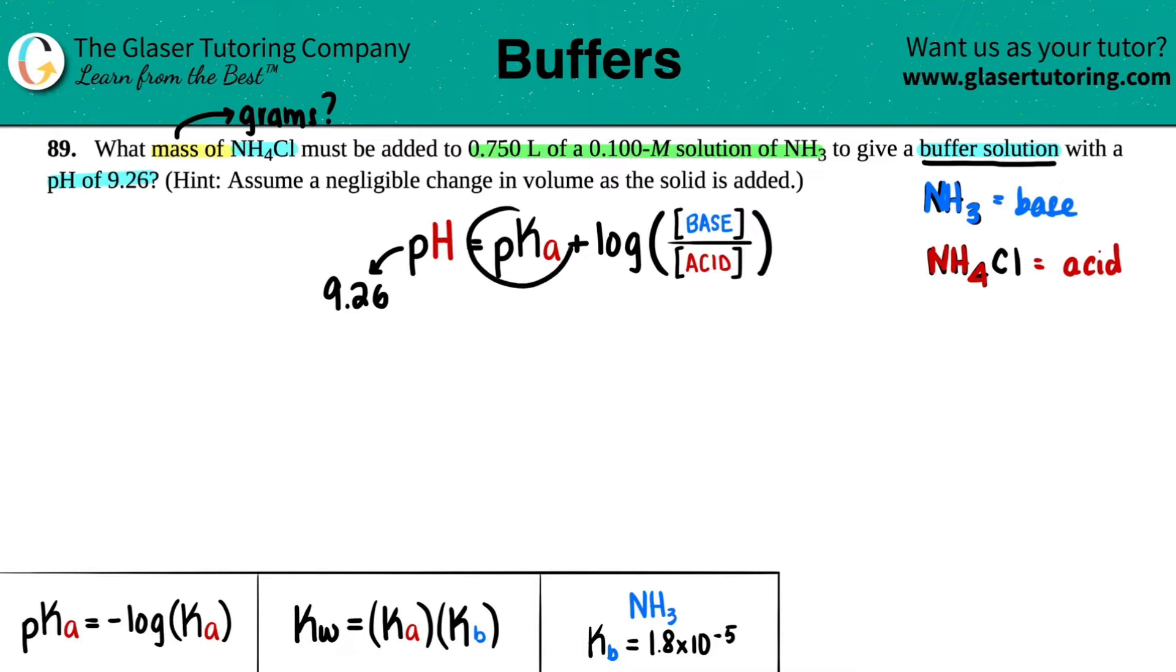We still need the pKa, the concentration of the base and the acid. NH4Cl is the acid and that's what the question is asking for, so I don't know what that number is. That's going to be labeled X. But they did tell us we had a 0.100 molarity solution of the base, so that's 0.1.